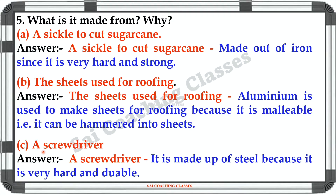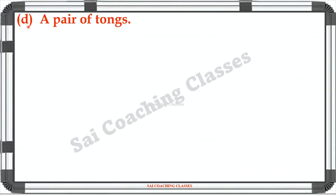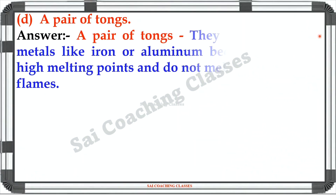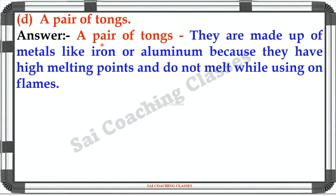Answer: Aluminium is used to make sheets for roofing because it is malleable, that is it can be hammered into sheets. C: Screwdriver. Answer: A screwdriver is made up of steel because it is very hard and durable. D: A pair of tongs. Answer: A pair of tongs is made up of metals like iron or aluminium because they have high melting points and do not melt while using on flames.